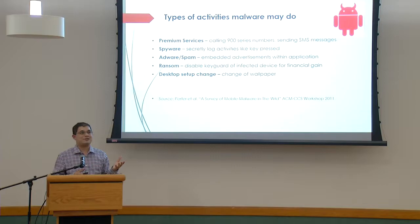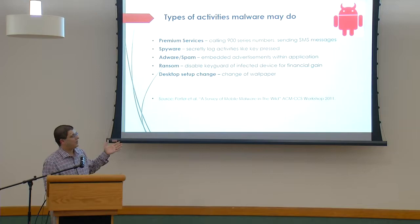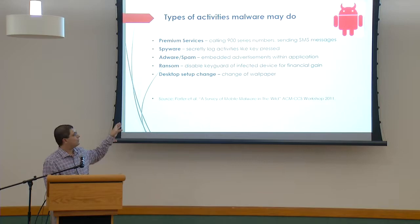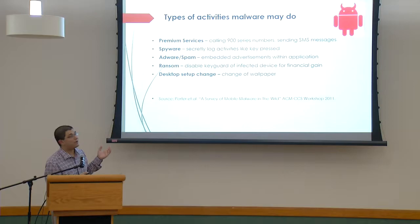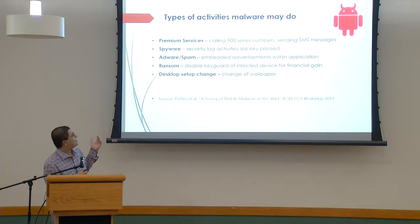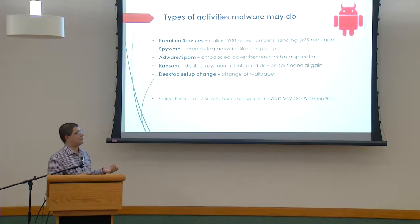There are some classifications of malware in the literature. I'm pointing to one done by a group from UC Berkeley, which described a lot of malware around 2011–12 — and they still apply today. Some malware sends unwanted phone calls to premium 900 numbers, charging the phone owner. Some malware does spyware operations, secretly logging activities. Then there's adware or spamware — you're running an app, but it's also generating lots of ads you didn't want, draining battery and taking bandwidth.